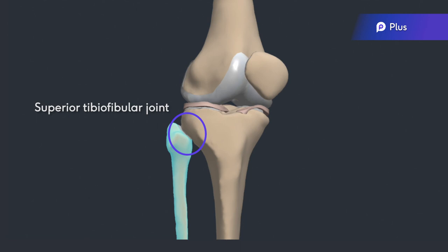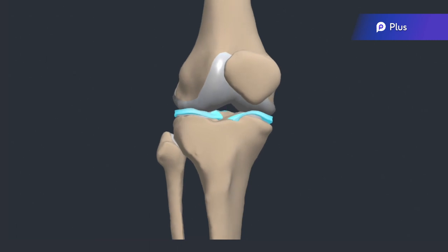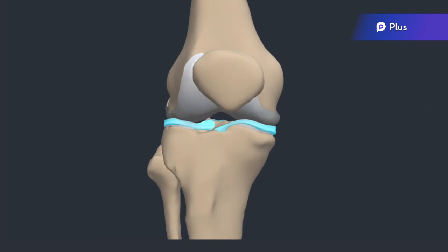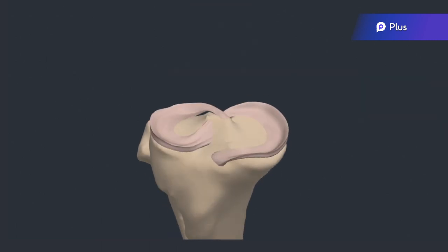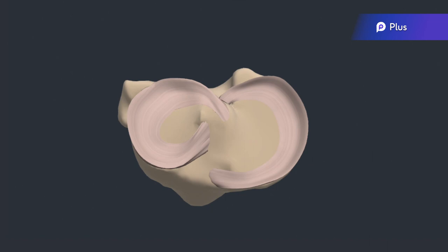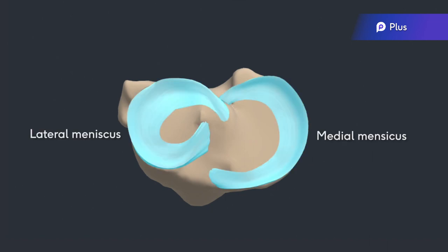Before we move on to the ligaments, it's important to discuss the menisci in the knee. Within each tibial femoral joint are two crescent-shaped fibrocartilaginous structures: a lateral and a medial meniscus.